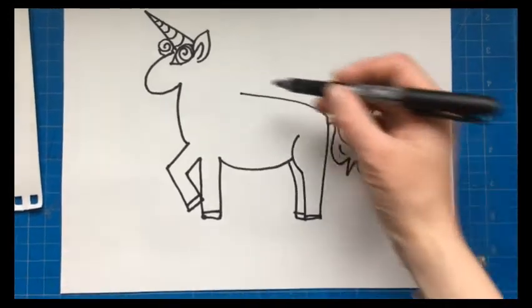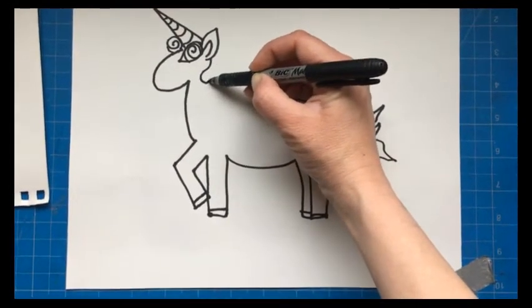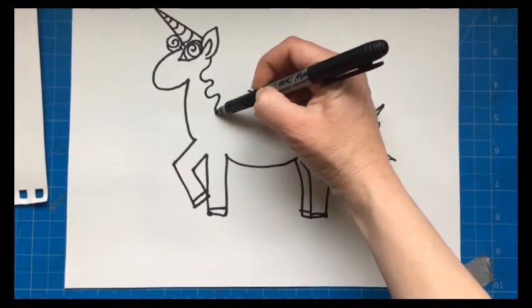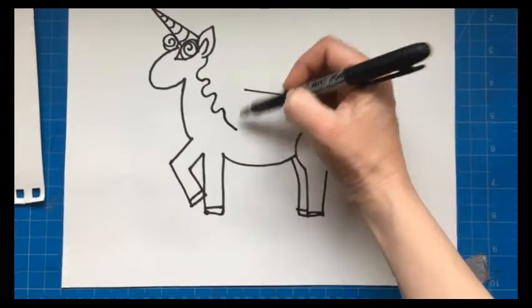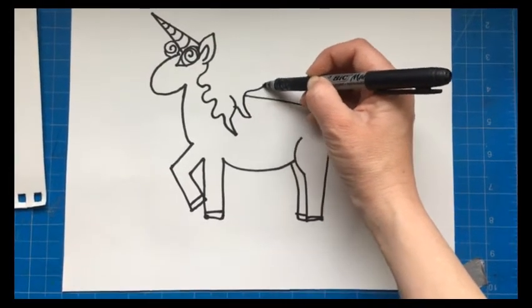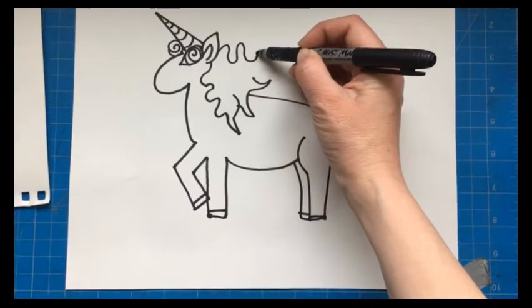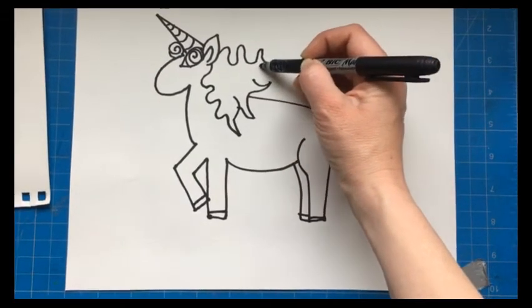The last part is going to be the mane, which is the hair on the neck. And you can do this a lot like you did with the tail. Just some wavy lines. You can't really mess this up. It's just a bunch of lines to make a bunch of hair. Wave them around. Or if you want your unicorn to have straight hair, you can do that too. I like it to be wild.